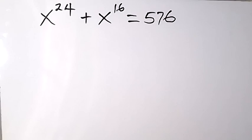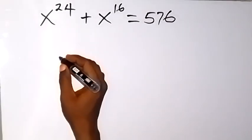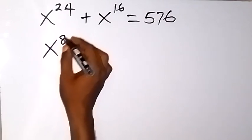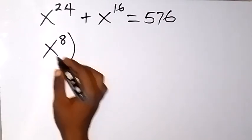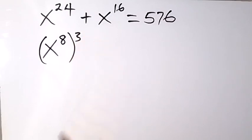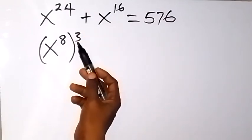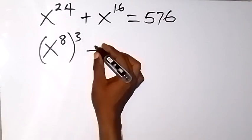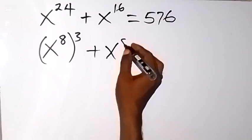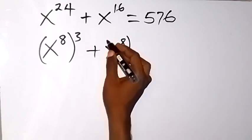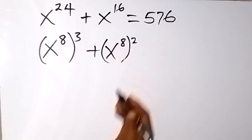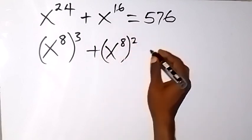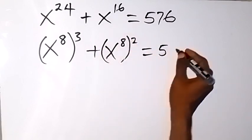Now here we are finding the value of x, and let's start by writing this as x raised to power 8, then raised to power 3. From the law of indices, the powers multiply and we still have x raised to power 24. Then plus, here as well we can write it in the form of x raised to power 8, then raised to power 2, which gives us x raised to power 16, equals 576.